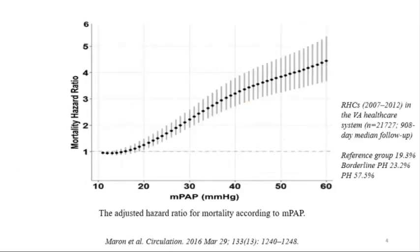One of these was the VA study that included many patients with data on those who underwent right heart cath—normal, borderline, and with pulmonary hypertension. Patients with borderline pulmonary artery pressure had worse outcome. There is increased mortality once you pass the 19 mmHg point. So it doesn't start at 25 as we use for diagnosis; it starts much earlier. The upper limit of normal is actually 20, and after that you have increased mortality.